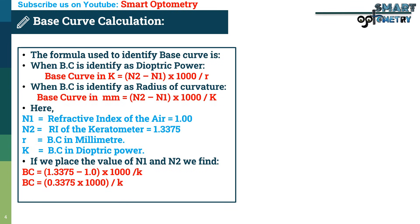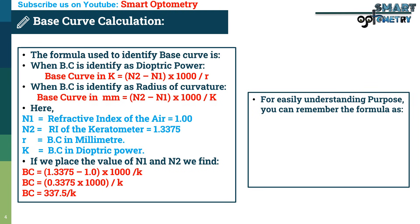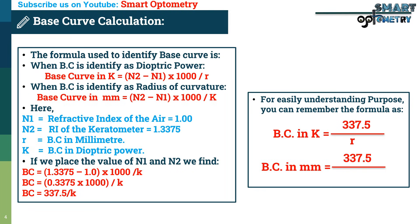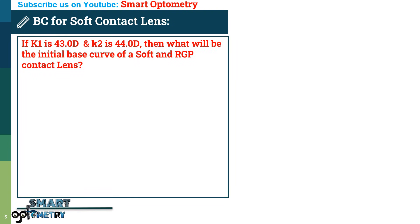If we place the values of n1 and n2, we find base curve equals 1.3375 minus 1, multiplied by 1000, divided by K, which equals 337.5 divided by K. So without remembering n1 and n2, we can easily remember the simplified formula: base curve in K equals 337.5 divided by r, or base curve in mm equals 337.5 divided by K. Now let's see some examples. If K1 is 43 diopters and K2 is 44 diopters, what will be the initial base curve of the soft and RGP contact lens?